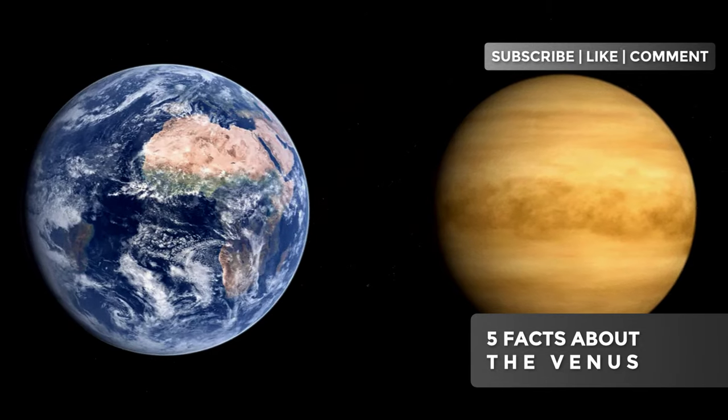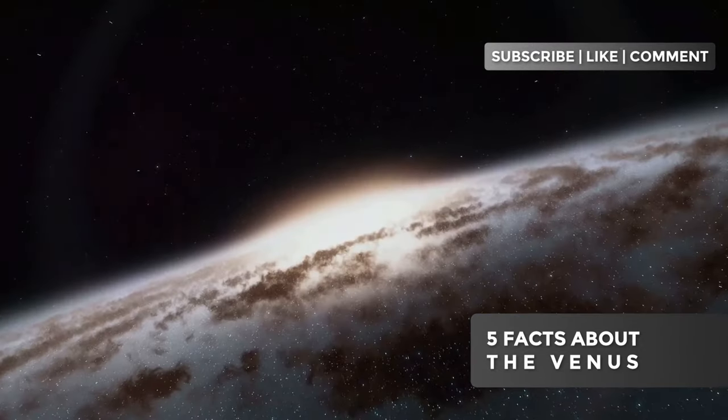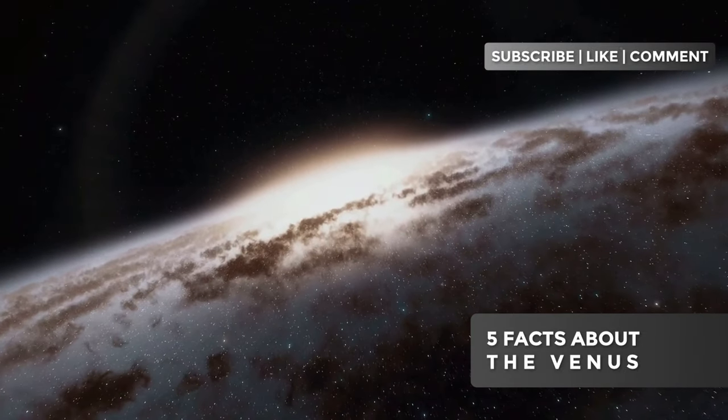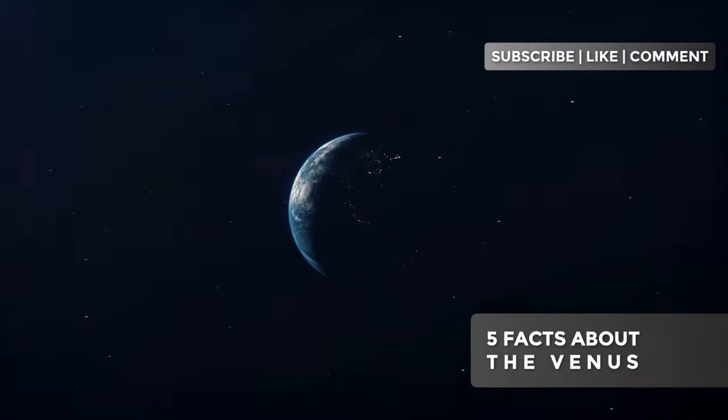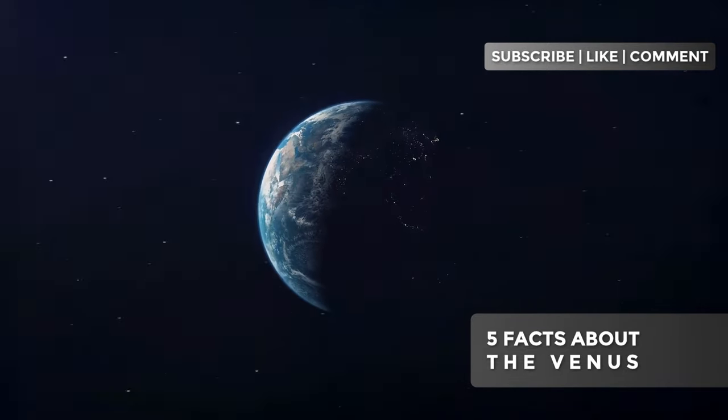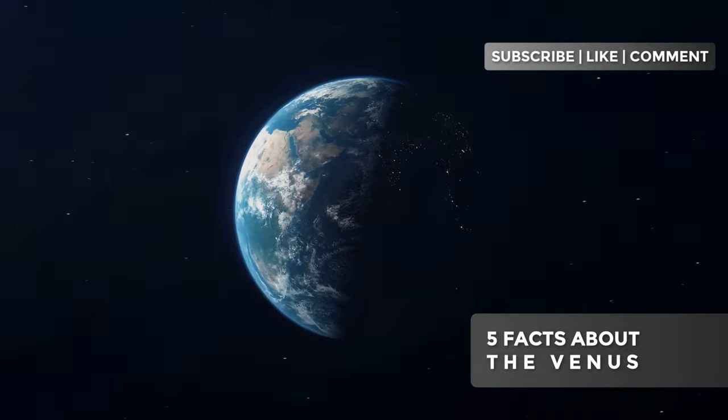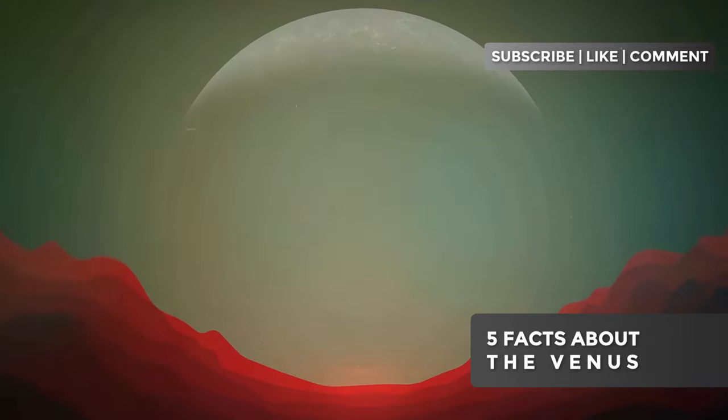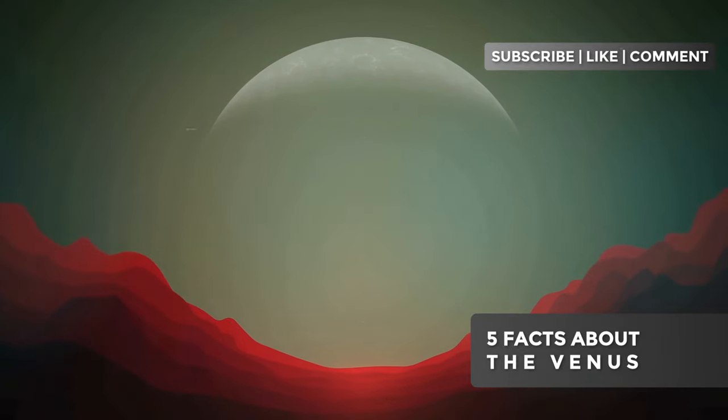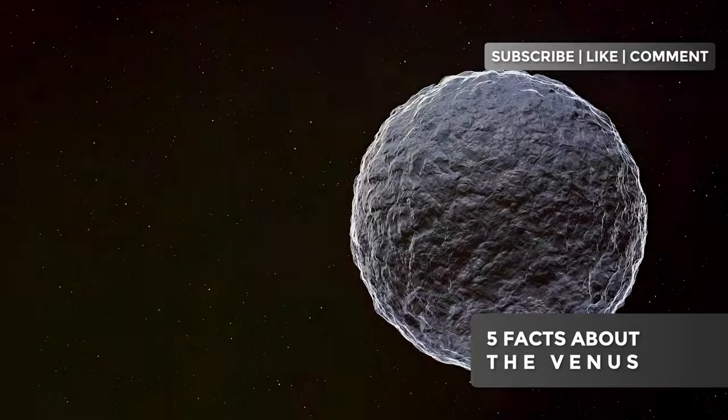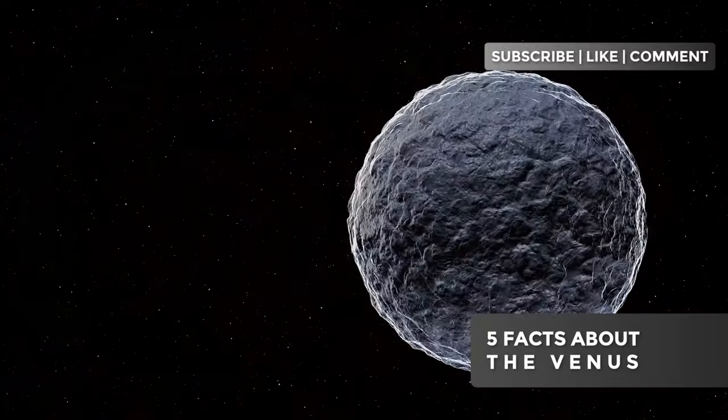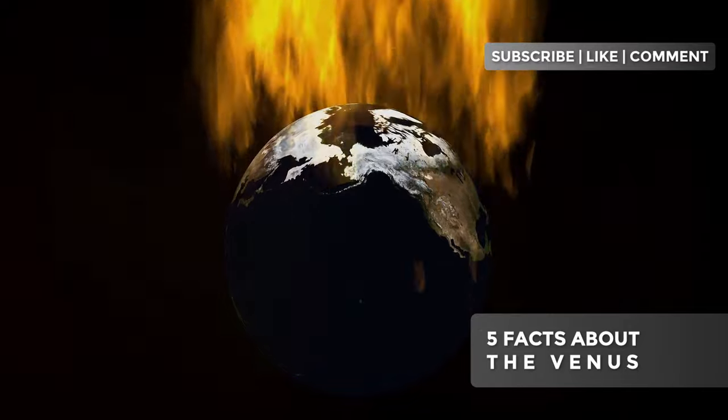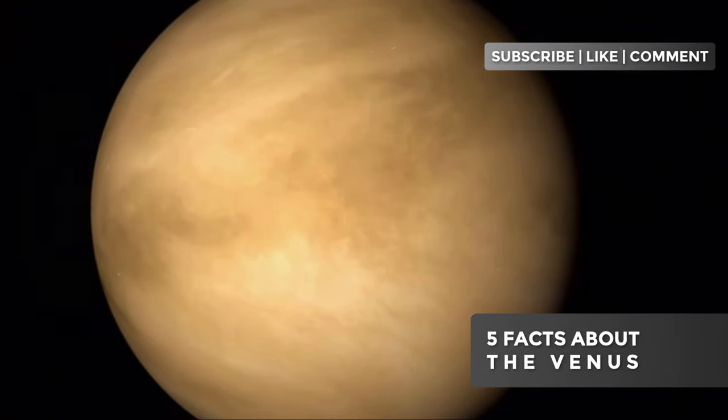Fact 5: The Distorted Mirror of Earth - Lessons from a Lost World. Our fifth and final mind-blowing fact about Venus leads us to a profound reflection on the nature of planetary evolution and the potential fate of our own world. Venus, often called Earth's evil twin due to its similar size and composition, serves as a distorted mirror of our planet, offering crucial lessons about extreme climate change and the fragility of planetary environments. Geological and atmospheric evidence suggests that Venus wasn't always the hell we see today. Billions of years ago, Venus may have been surprisingly similar to early Earth. Scientific models indicate that the planet likely had oceans of liquid water on its surface, a milder atmosphere, and possibly even conditions conducive to simple forms of life. So what happened to transform this potentially habitable world into the inhospitable planet we observe today?